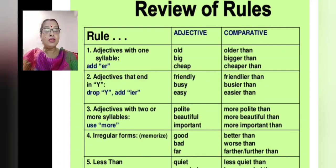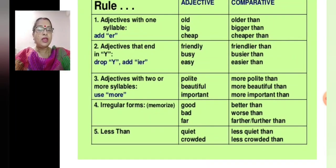We also have irregular forms you need to remember: the adjective good becomes better than in comparative; bad becomes worse than; and far becomes farther or further than. Last rule: less than — if the positive is quiet, we can write less quiet than; crowded becomes less crowded than.